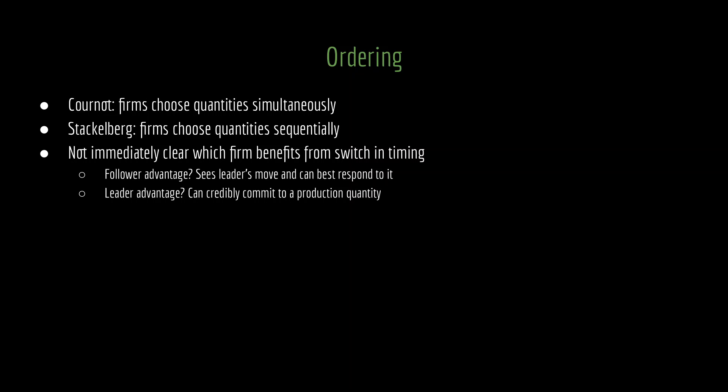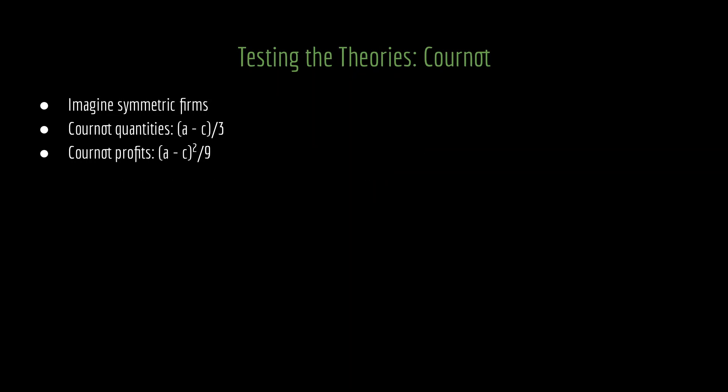We can answer this question by simply comparing what happens under Cournot to what happens under Stackelberg. To make that a little bit easier, we're going to imagine that we have symmetric firms. When firm 1's marginal cost equals firm 2's marginal cost, then the only thing that's going to differentiate them under Stackelberg is the order of moves. This will give us a clean comparison between the two.